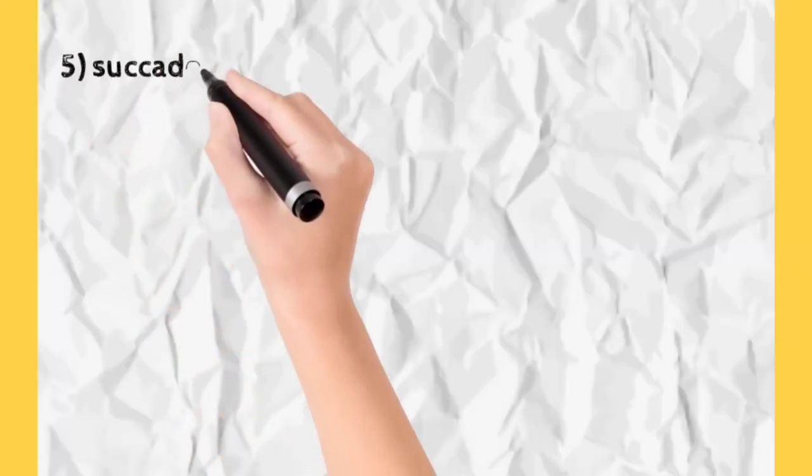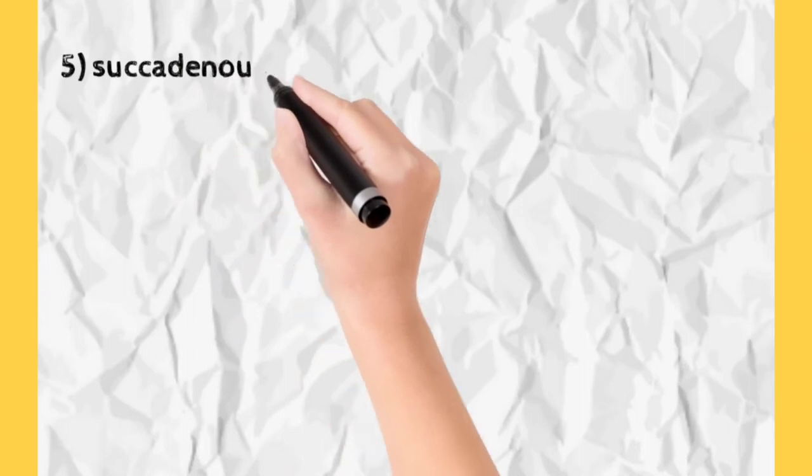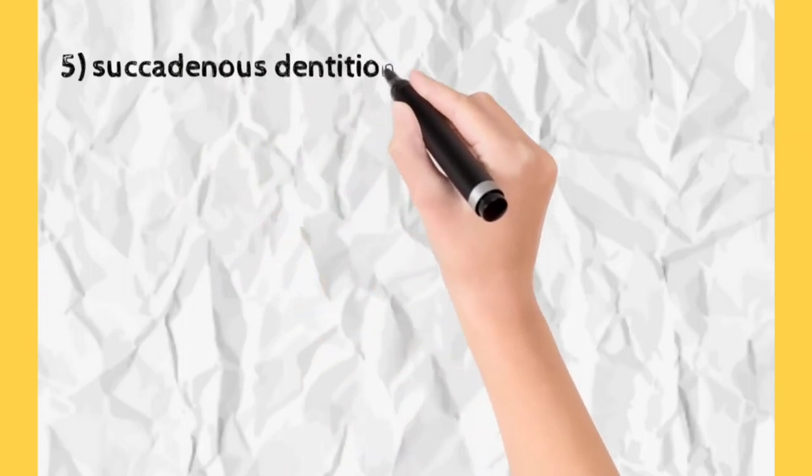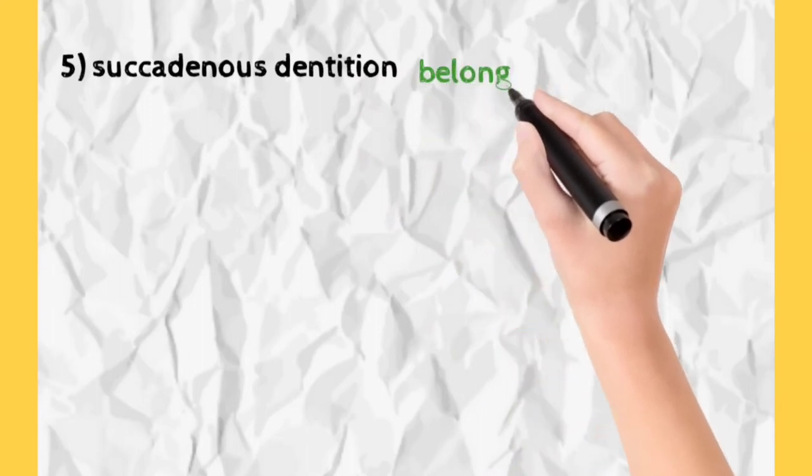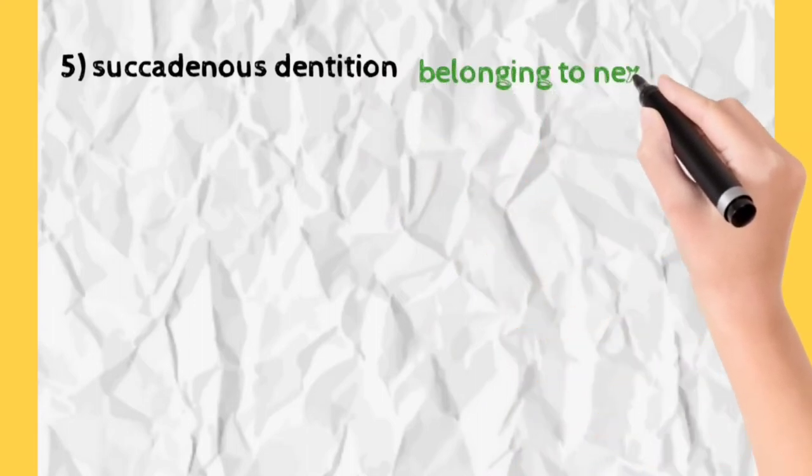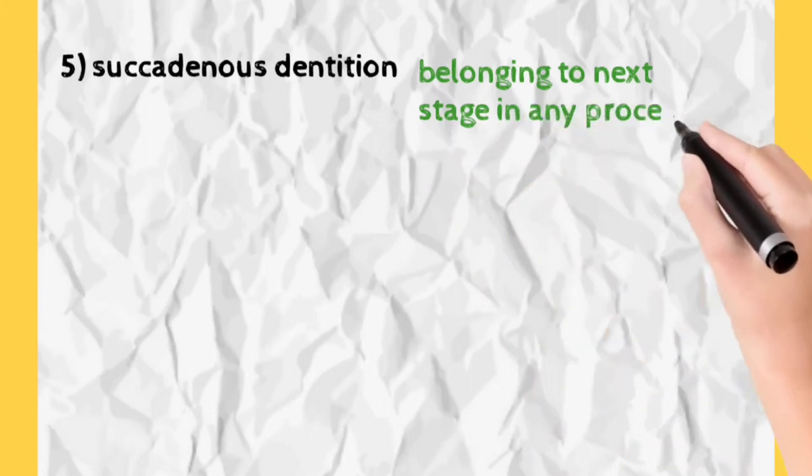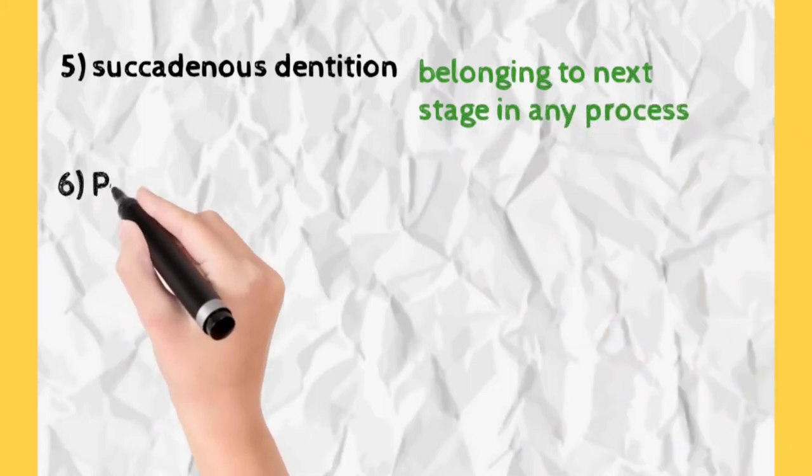Then the next term is succedaneous dentition. Our permanent teeth which come after milk teeth fall off are called succedaneous dentition because succedaneous is derived from the word succeeding, which means what comes after first stage or primary stage.